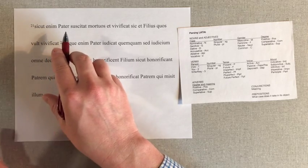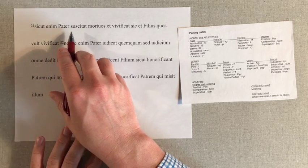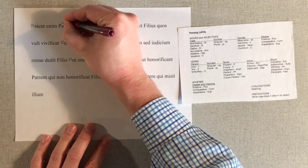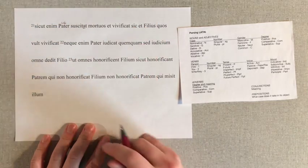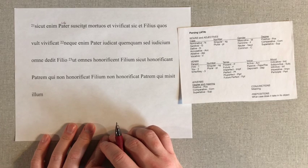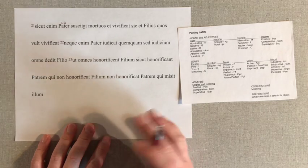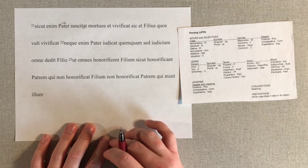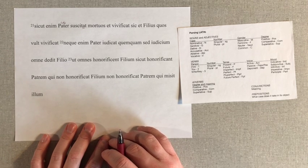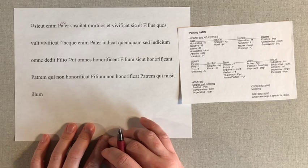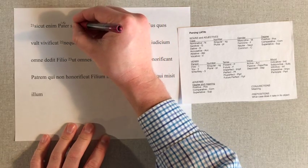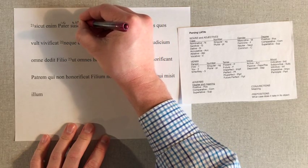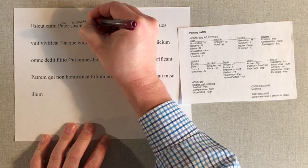Pater is our subject, because there's no change to the stem there. Suscitat — we have -at as our ending, and this is a first conjugation verb, so it's suscito, suscitare, suscitavi, suscitatum, forming like a typical first conjugation. So we get third person singular, present active indicative.